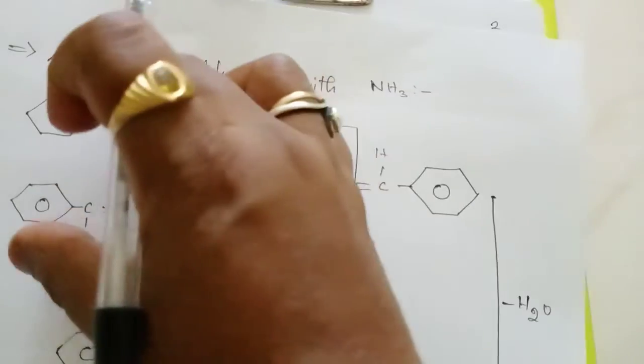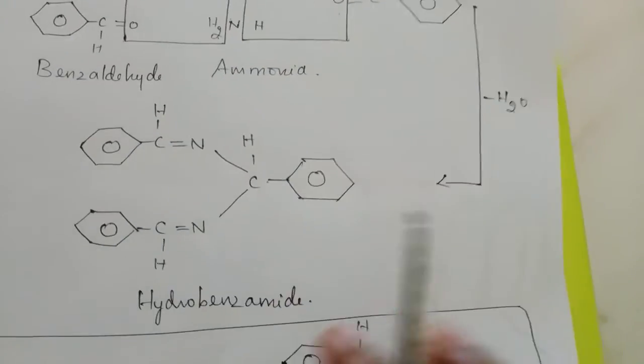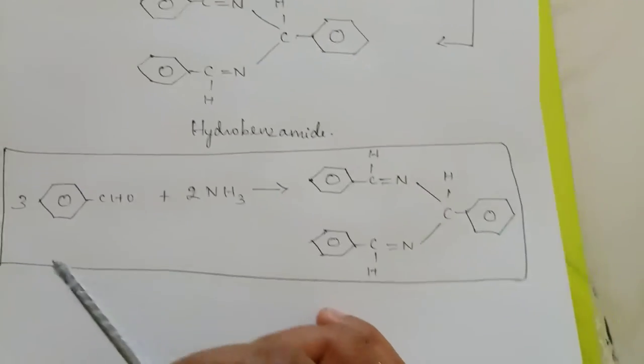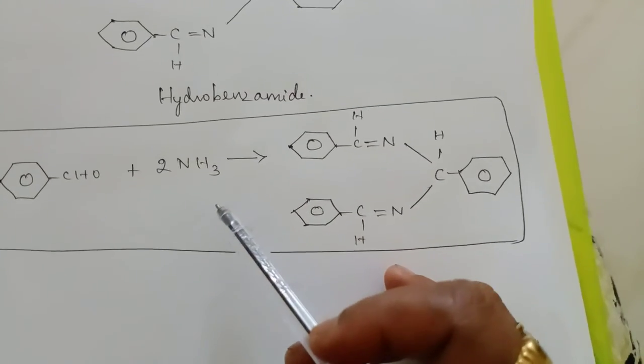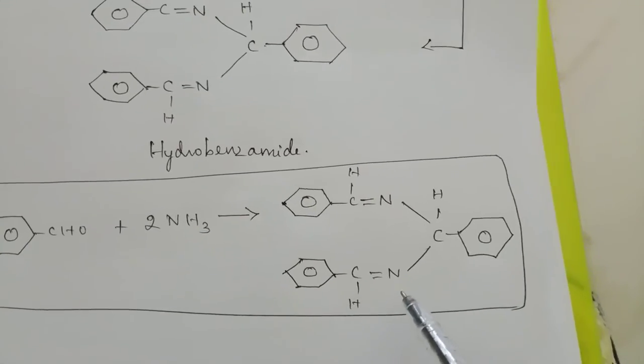Hydrobenzamide. So that is why they have displayed like this to understand this structure. Hydrobenzamide you will get. So the overall reaction is you need three moles of benzaldehyde, two moles of ammonia to get one mole of hydrobenzamide.